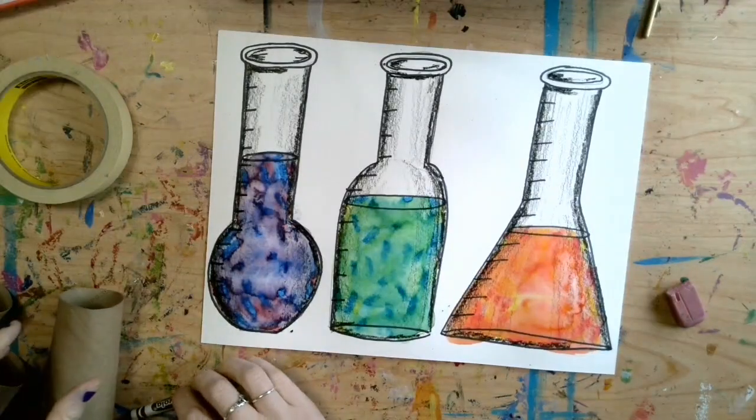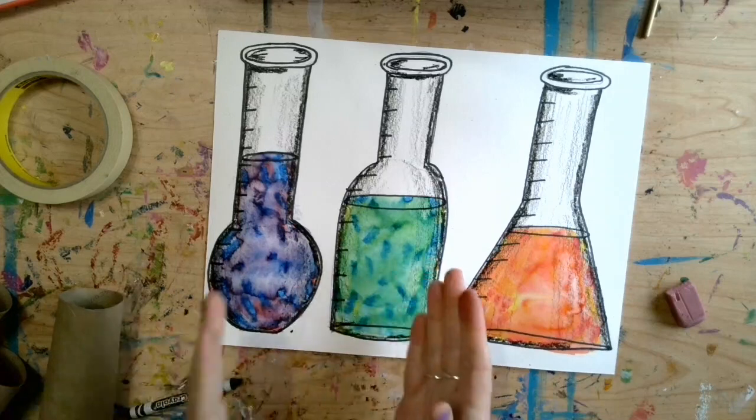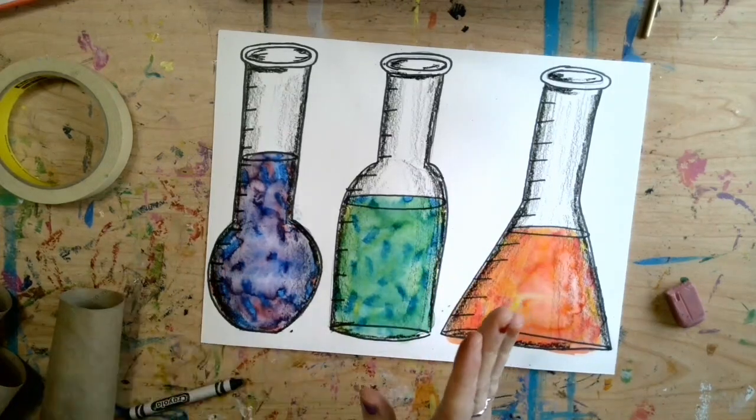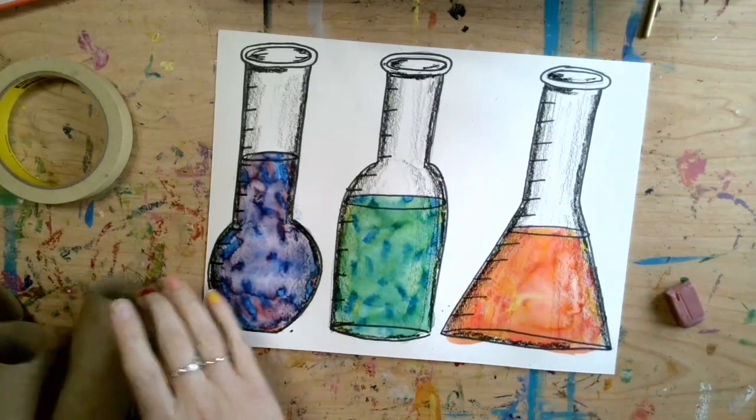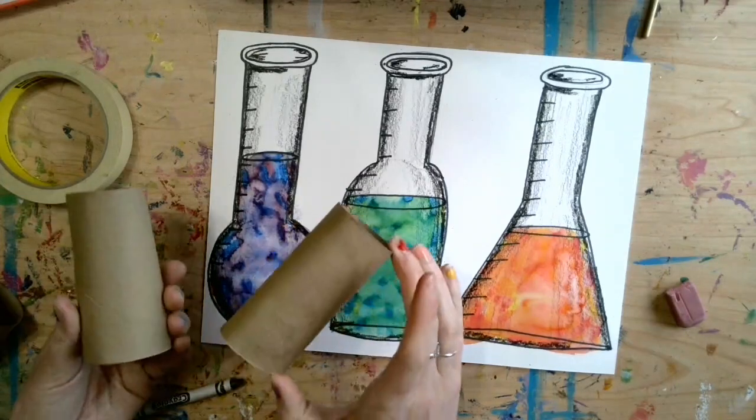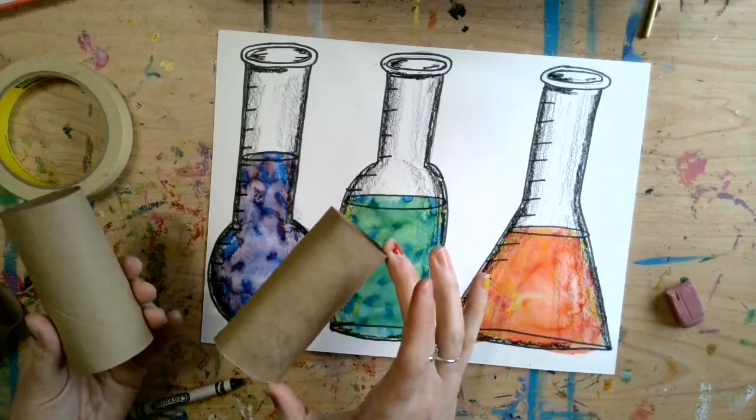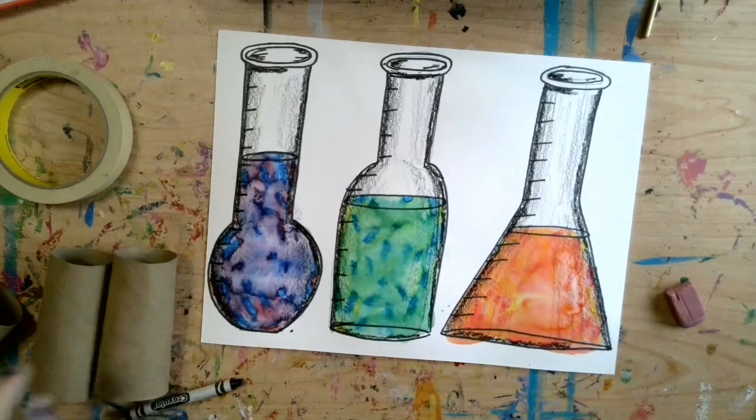All right, so if you decided that you want to take this one step further and make these into standing forms, you're going to need to find some type of thing to make them stand up. So I'm going to use toilet paper tubes, you could use like a paper stand or something else if you have that available.